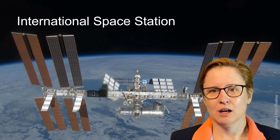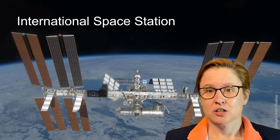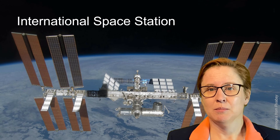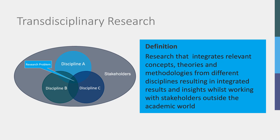In order to create a house in space, engineers, social scientists, biologists, and many more disciplines work together. Finally, there is transdisciplinary research. This is research that integrates all disciplines, as with interdisciplinary research, but it also involves non-academic stakeholders from the outside world.